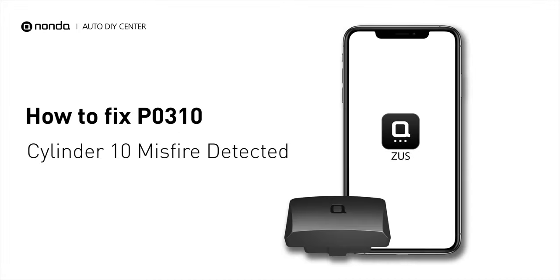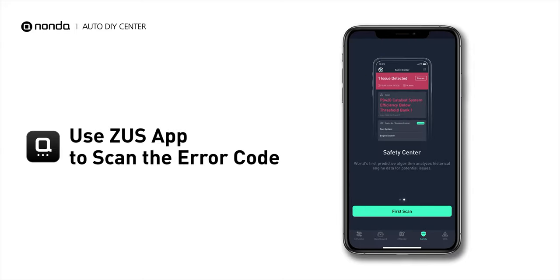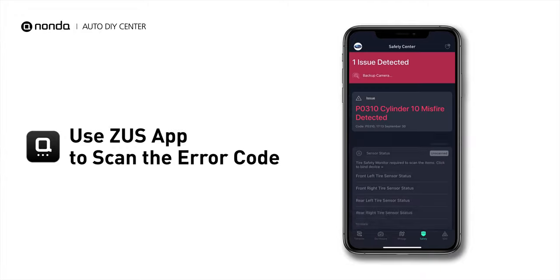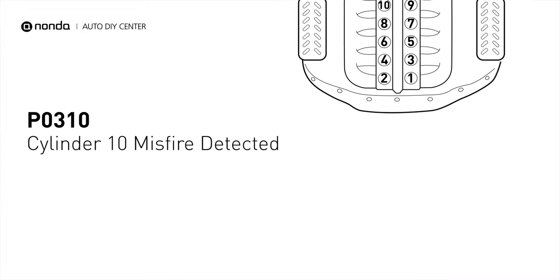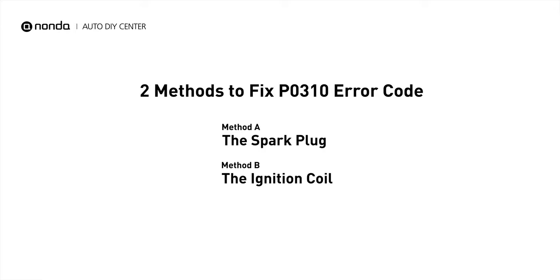If you are getting a PO310 error code, this video is going to show you two practical solutions to fix the error code at home. Use the Zeus app to scan your vehicle and see the error code PO310 — it indicates that cylinder number 10 is experiencing misfires. There are two simple DIY solutions you can try to solve this problem.